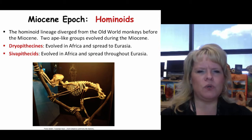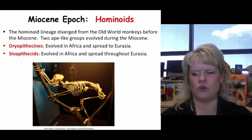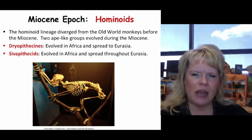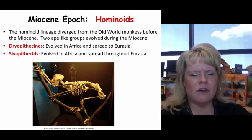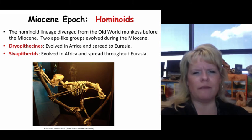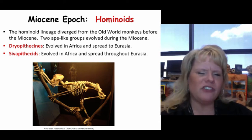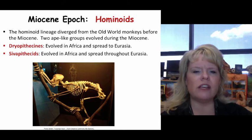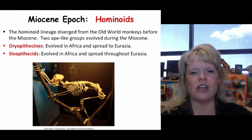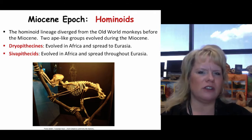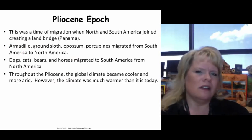Hominoids diverged from Old World monkeys before the Miocene, then split into two groups during the Miocene. Dryopithecines were the first group of hominoids to evolve into an ape-like form; they evolved in Africa and spread to Eurasia. Sivapithecines were the second group of ape-like animals that evolved during the Miocene, also evolving in Africa and spreading through Eurasia. These two groups will become important as we continue our journey through primate evolution.